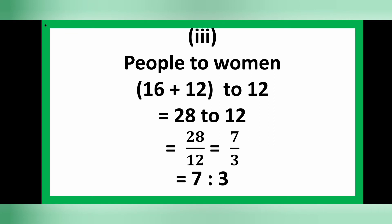For the third part, how many people are on the train? There are 16 men and 12 women; adding these gives 16 plus 12 equals 28 people on the train. So the ratio of people to women is 28 to 12. As a fraction: 28 over 12, which when divided by 4 gives 7 over 3. So the ratio of people to women is 7 to 3.